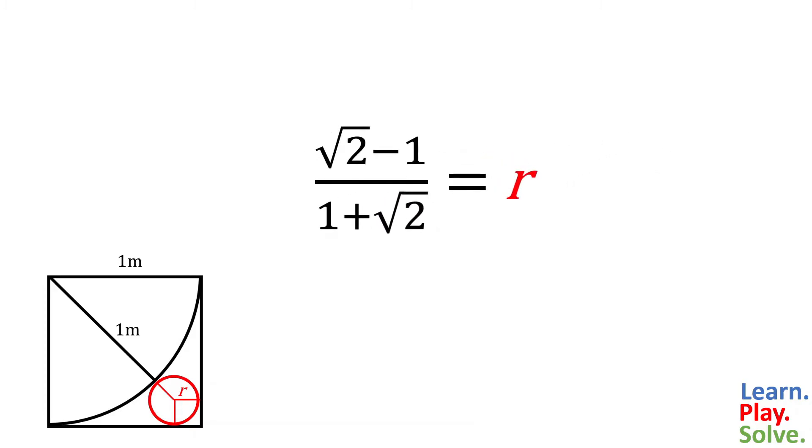Now we can divide by 1 plus root 2 and rearrange the terms. At this point, we've already solved for r, but we can simplify this and make it prettier by rationalizing the denominator.